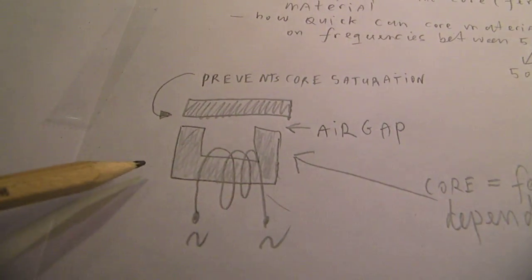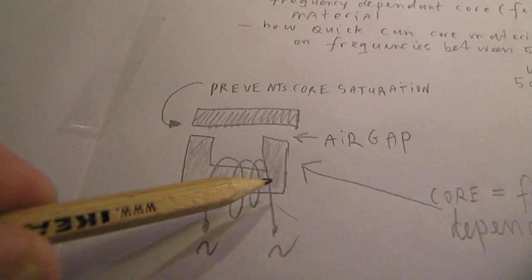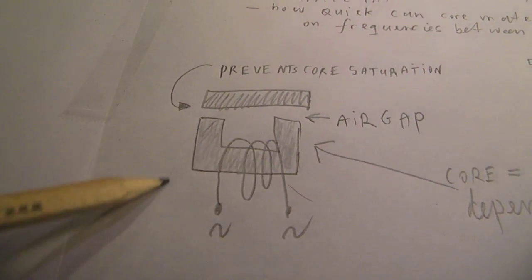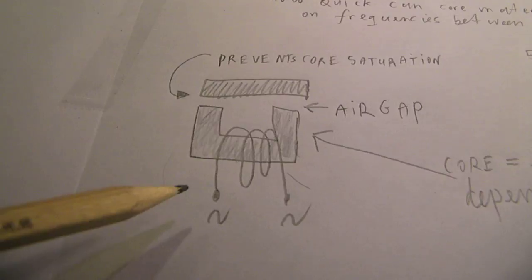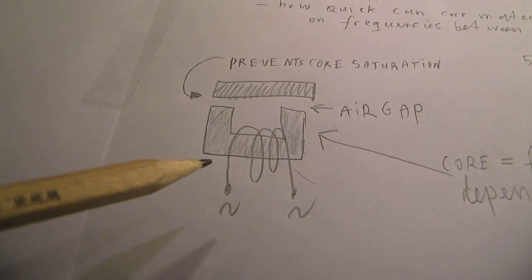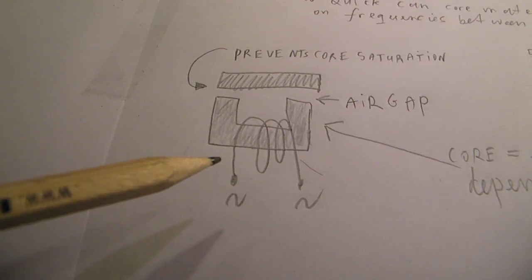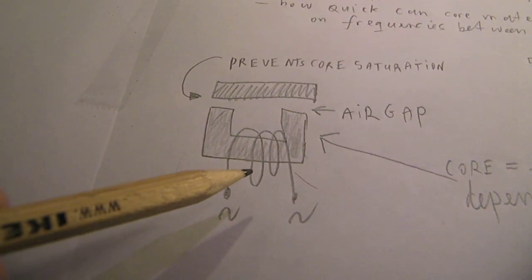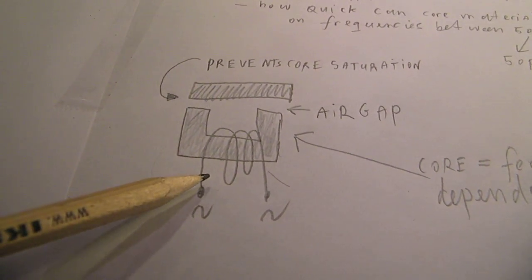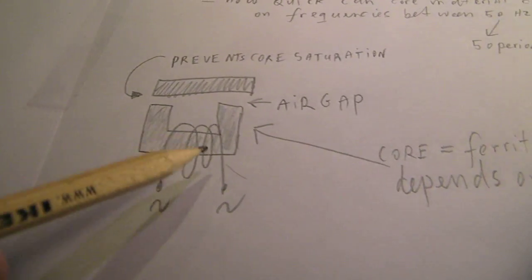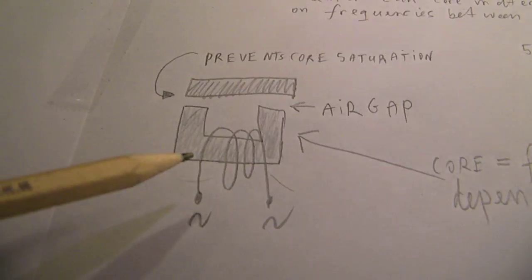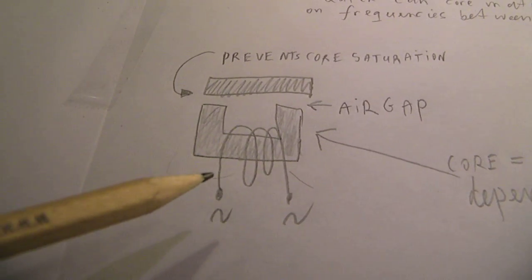The core here must not be magnetized permanently. When such a coil is magnetized permanently, it loses its properties as a choke coil. That means that the field cannot be reversed quickly on say 50 Hertz or 100 Hertz or whatever.